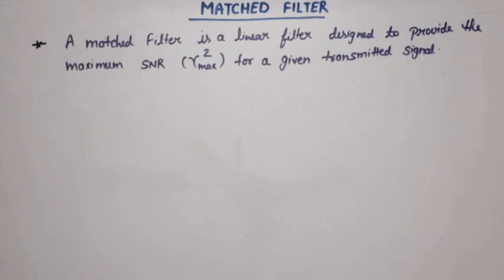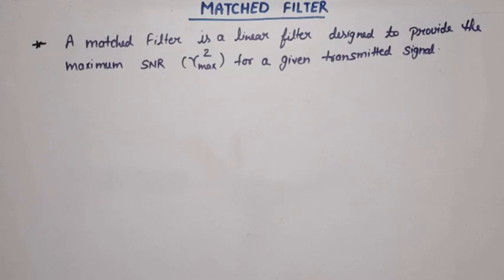...designed to provide the maximum SNR — signal-to-noise ratio — for a given transmitted signal. Why? If signal-to-noise ratio is maximum, the probability of error will be minimum. If probability of error is minimum, it is obvious that the transmitted signal, when received at the receiver end, will be the same — meaning noise will be less and signal power will be greater in comparison to noise power, meaning it will match with the transmitted signal. This is the definition of matched filter. Now let's draw the block diagram, and then we will find out the SNR of matched filter.